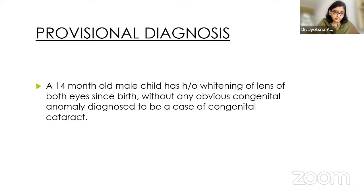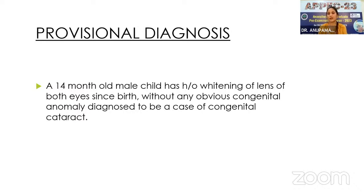For induction of this pediatric patient, before taking the patient to the OT, the OT temperature is ensured by switching off ACs and turning on warmers. The anesthesia machine and suction are checked, induction and emergency drugs are prepared, and warm IV fluids are ensured. Since no IV cannula is present, inhalational induction is preferred: the circuit is primed with 8% sevoflurane, and standard ASA monitors — ECG, NIBP, temperature probe, and pulse oximetry — are attached.